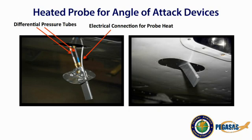Installation of the optional probe heat function requires some planning. The probe heat will require a separate switch and fuse or breaker along with the appropriate wiring per Advisory Circular AC 43.13-1B, Chapter 11, Section 5. The probe heat requires over 7A of electrical power. Use shielded wire to minimize interference with other instrumentation and route the wiring to minimize risk of mechanical damage or damage caused by fluids, vapors, or sources of heat. Operation of the probe heat does not affect the angle of attack calculations or readings.